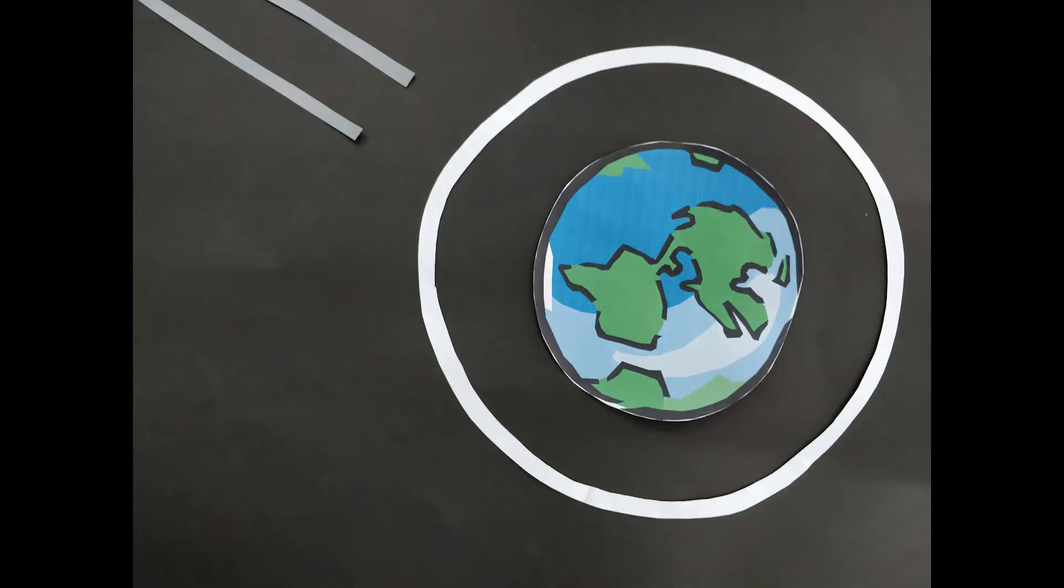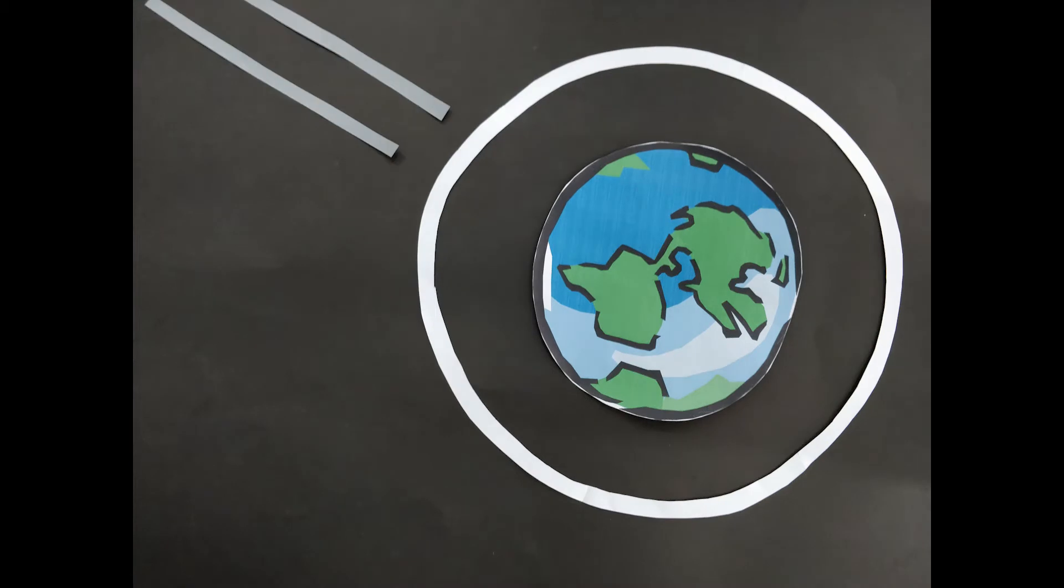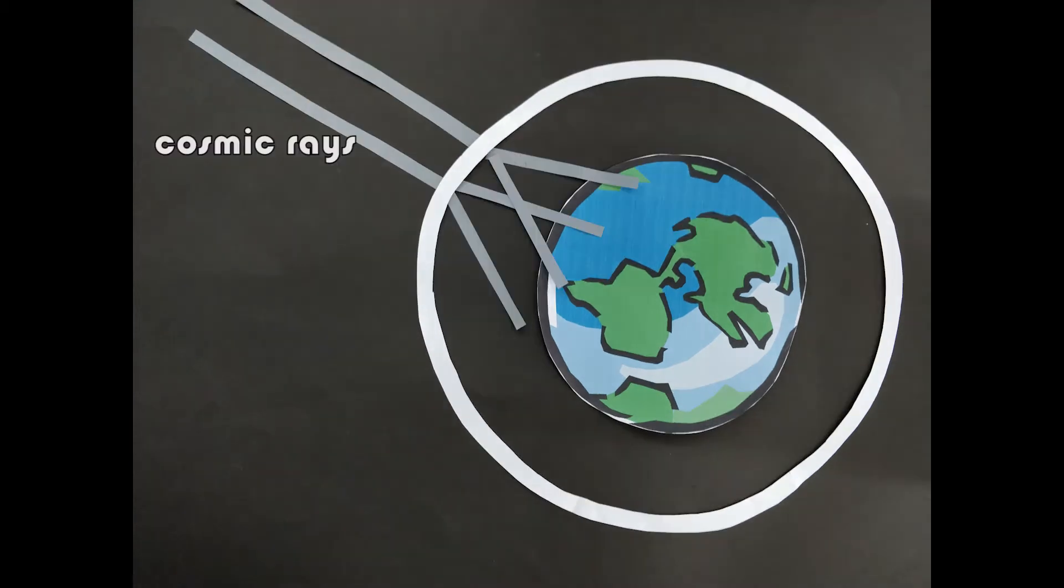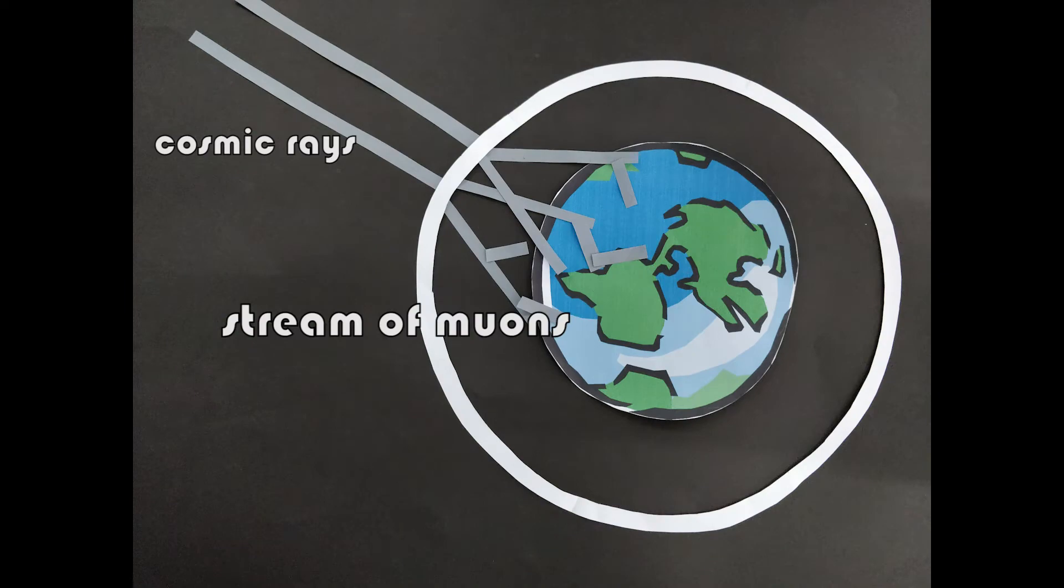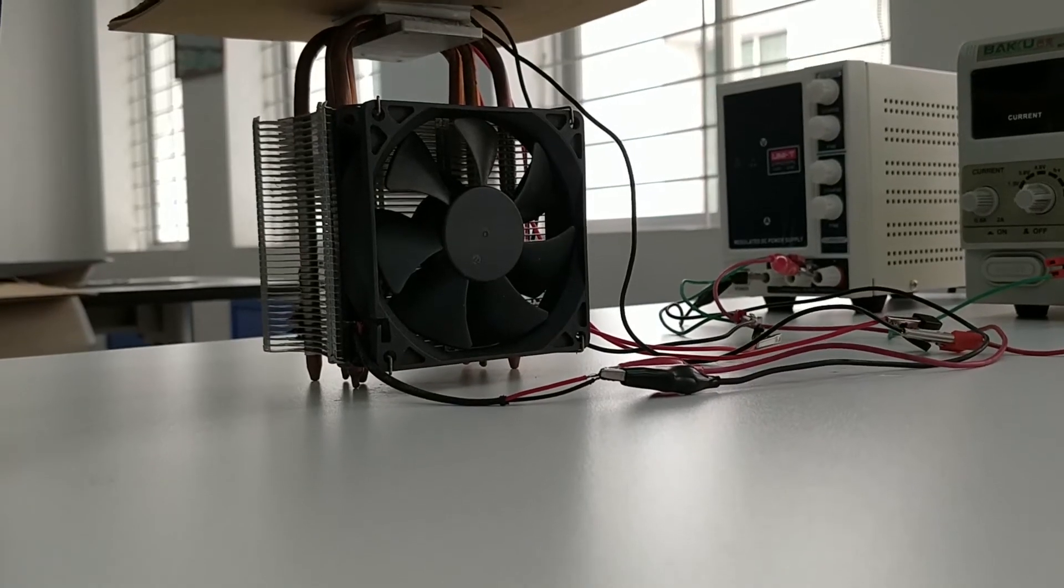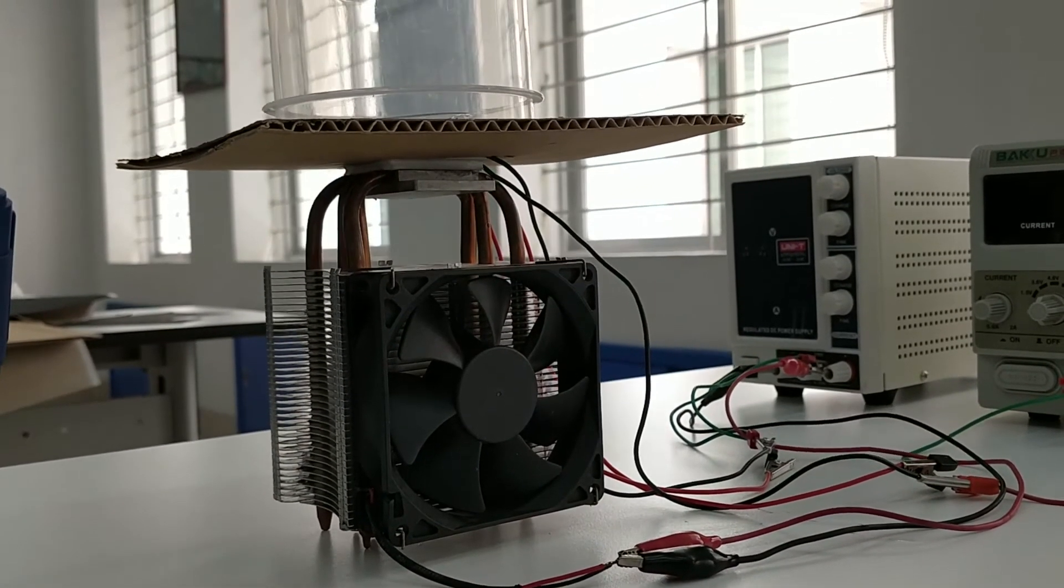When cosmic rays hit the surface of the atmosphere, streams of secondary muons are formed which travel to the Earth's surface due to time dilation and length contraction. It's fun to imagine that millions of these muons pass through our bodies each second.